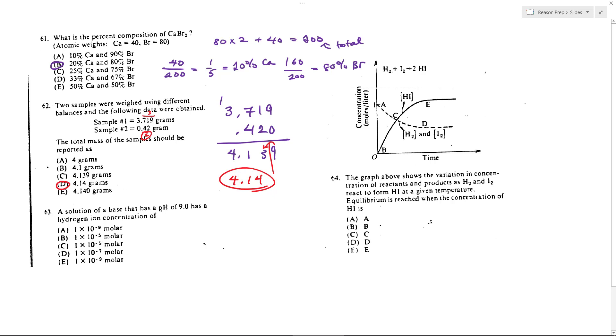So we want to know if something has a pH of 9, what is its H-plus concentration? So we know that the minus log of the H-plus concentration is equal to pH. So if you reverse that, the H-plus concentration, if you raise both sides as a power of 10, will be equal to 10 to the negative pH. And so here, because the pH is 9, we're going to get 10 to the minus 9, or 1 times 10 to the minus 9. So that's why the answer is E.